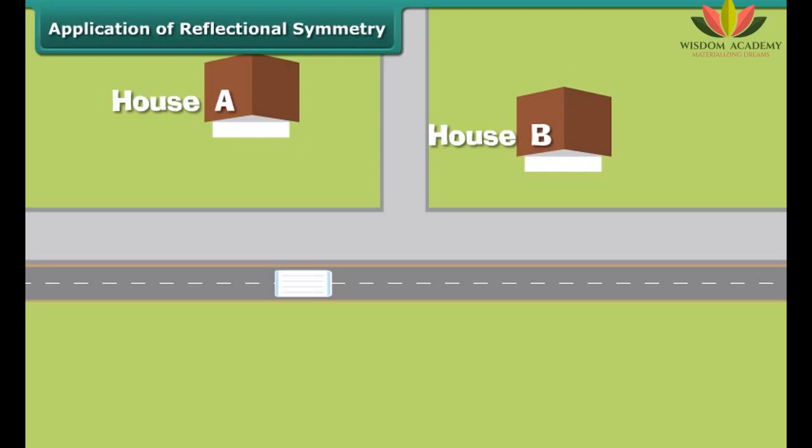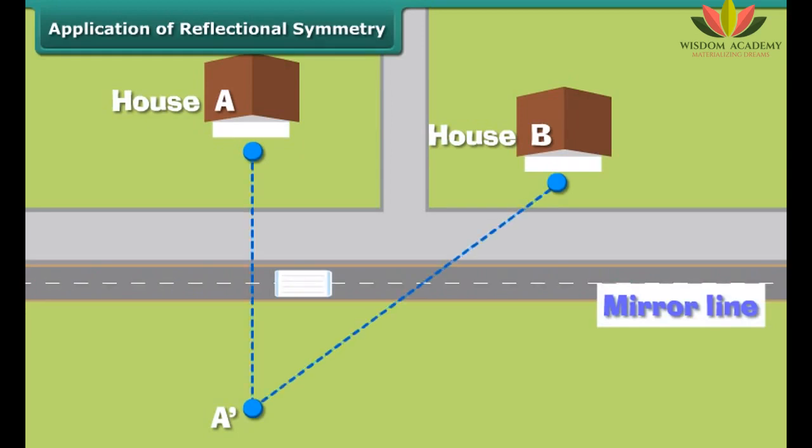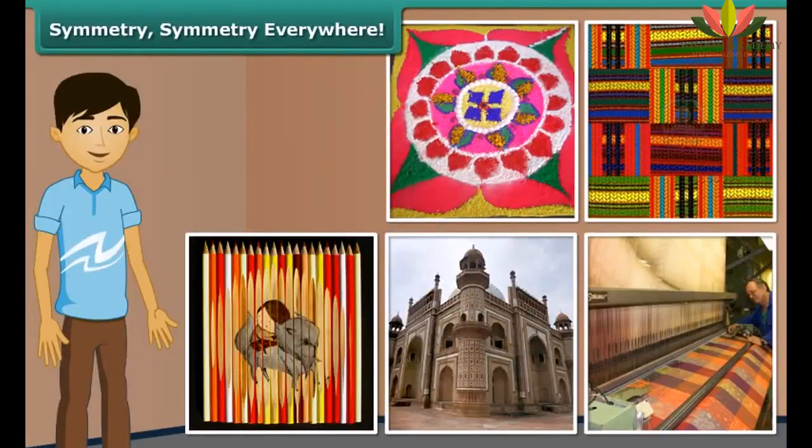Charm, a milkman, wants to park his van at some point on street and distribute milk to houses A and B. Can you suggest him where should he park his van so that his walking distance from the street to the houses A and B will be least?